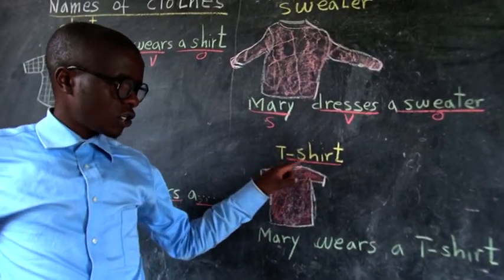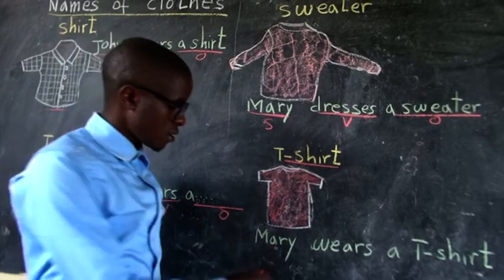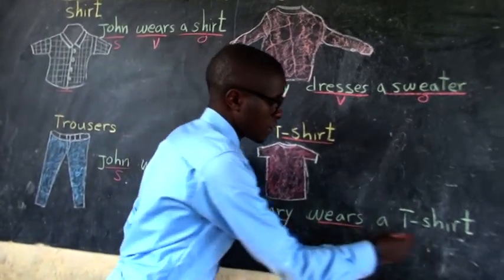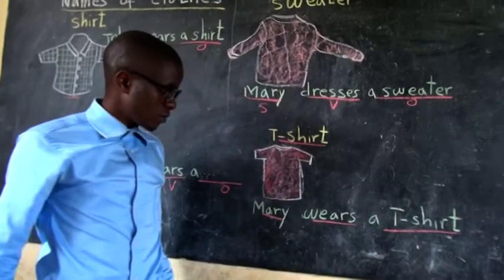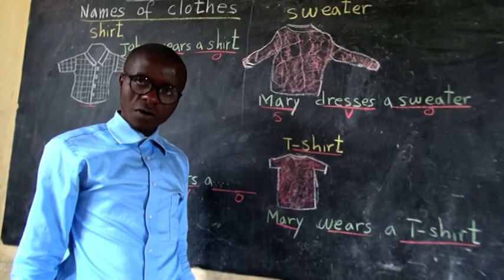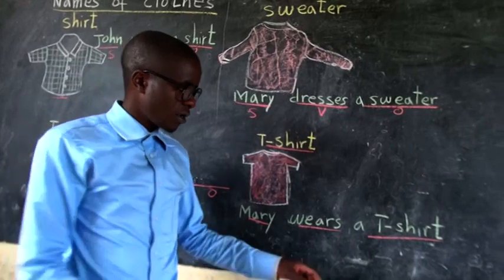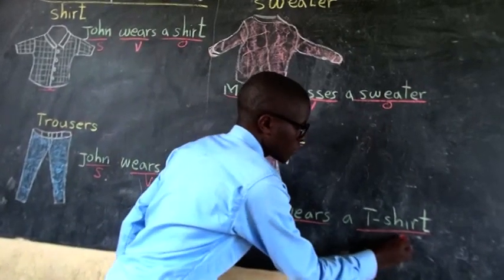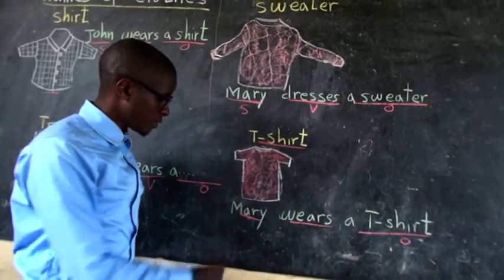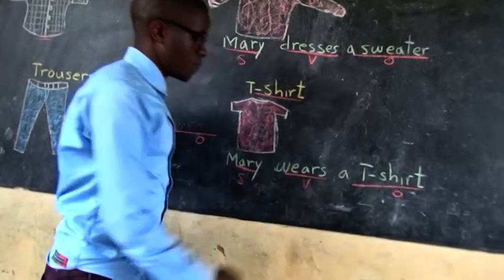A t-shirt. Mary wears a t-shirt. What does Mary wear? What does Mary put on? A t-shirt. Here is the subject. Here is the verb.